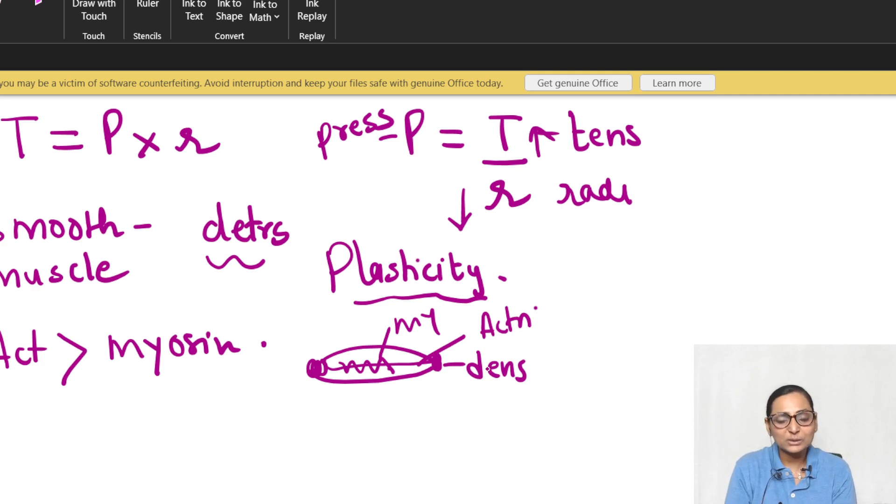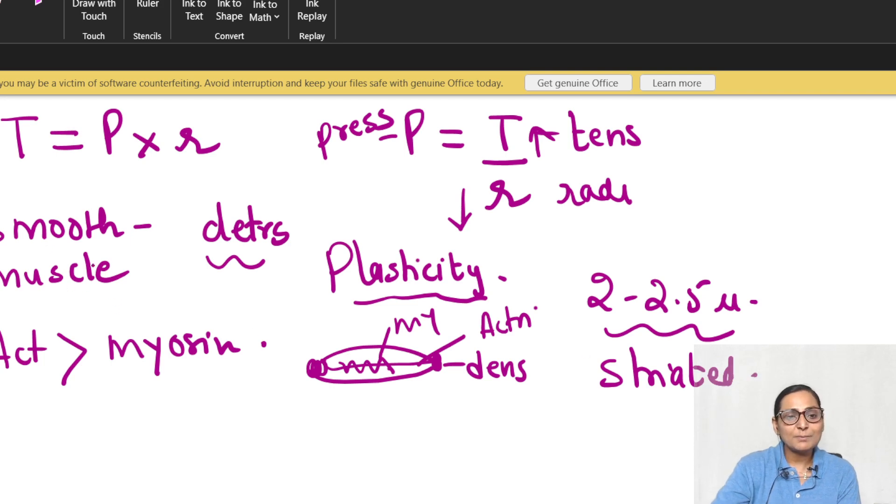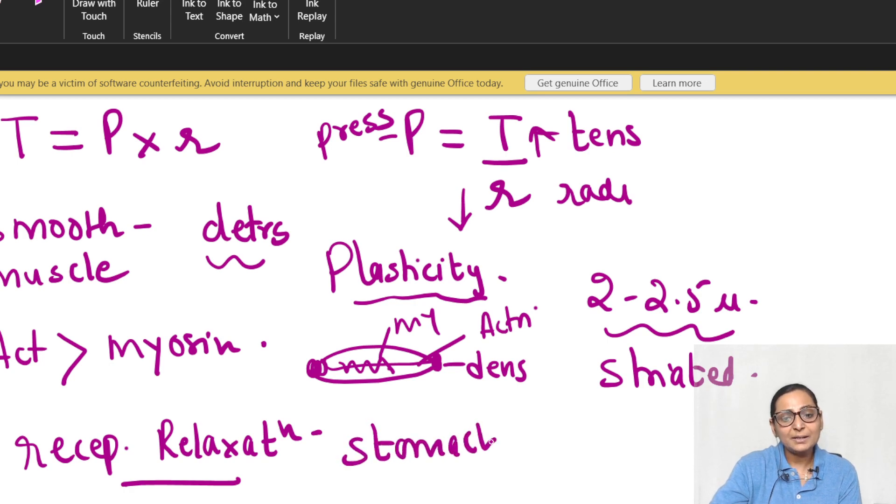Whatever is the alignment of myosin, myosin will always have actin to interdigitate, so they can develop active tension at whatever length. They may develop active tension at a smaller length or even a larger length, which is not a property of striated muscle where 2 to 2.5 microns is the optimum length. The smooth muscles exhibit plasticity.